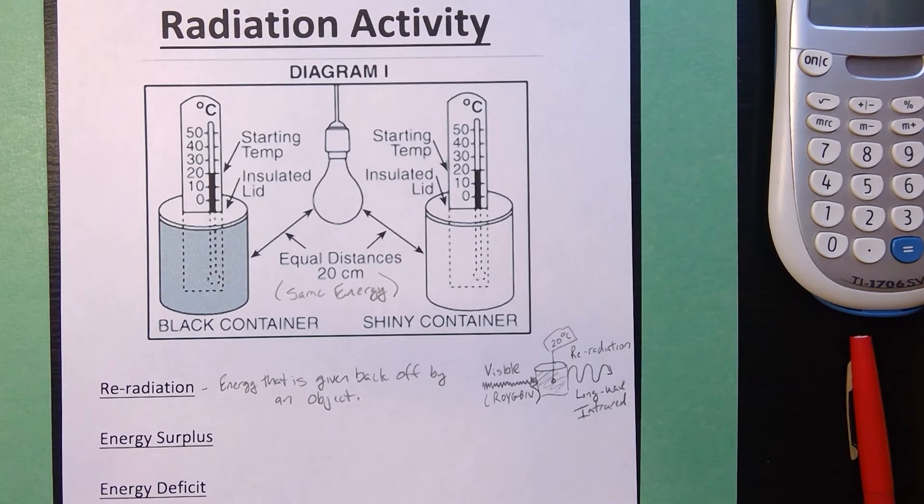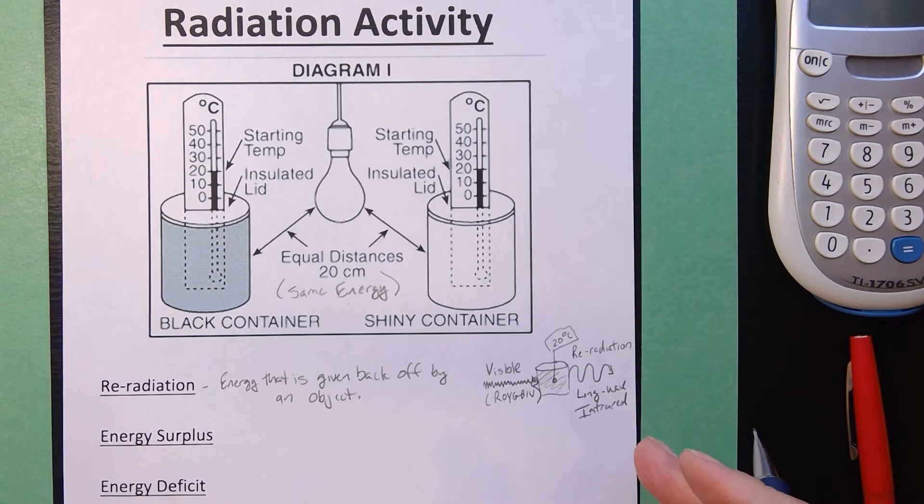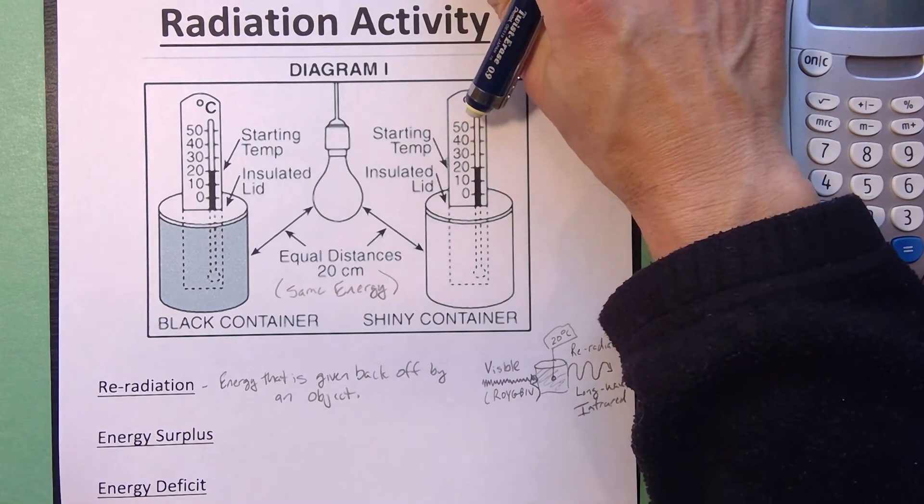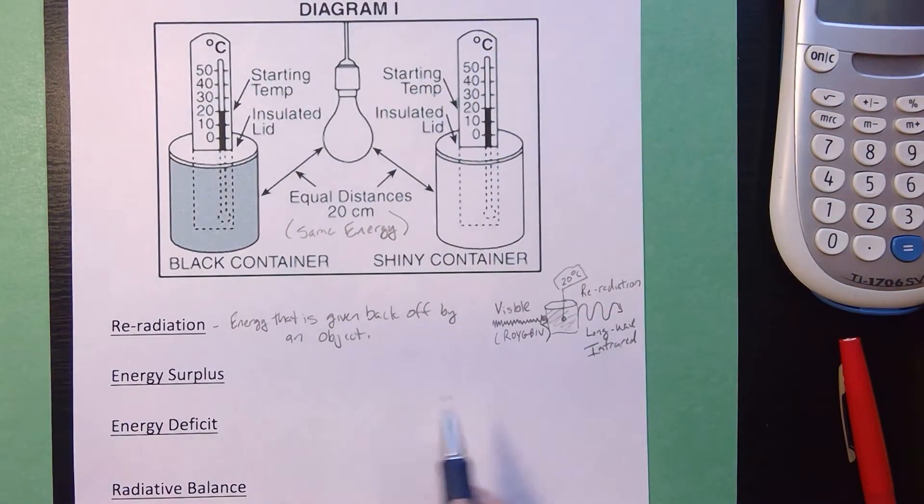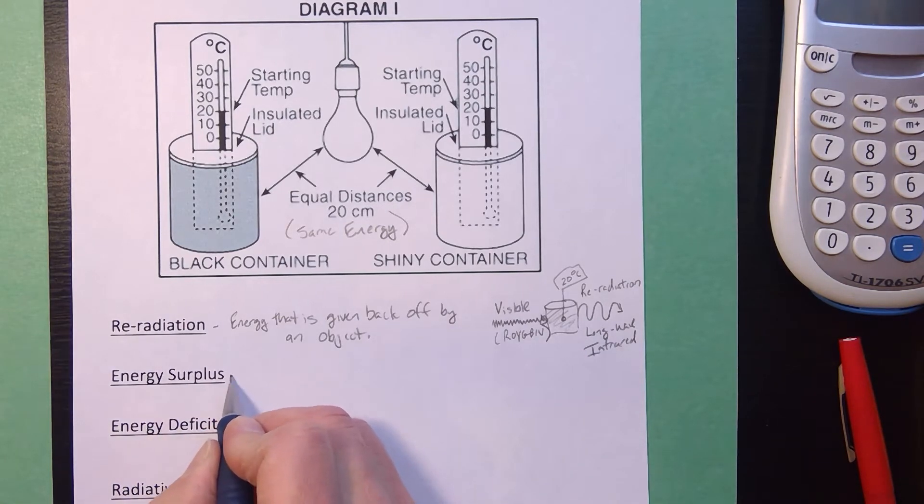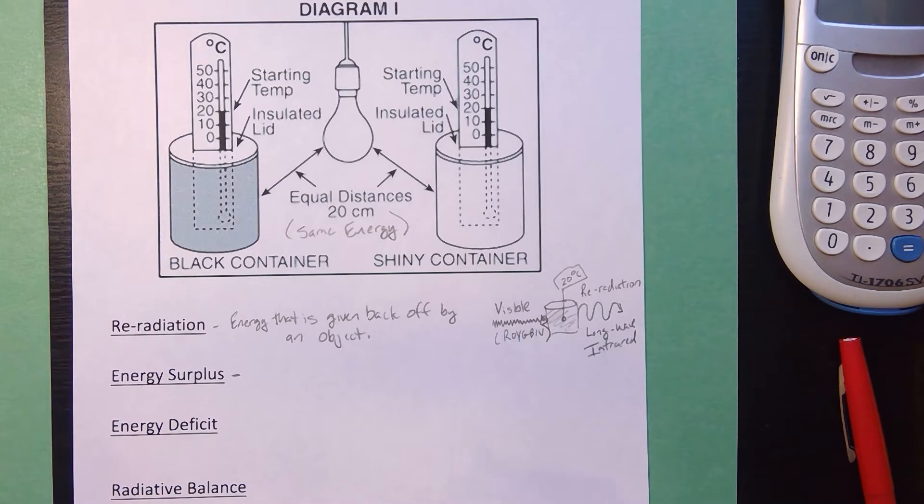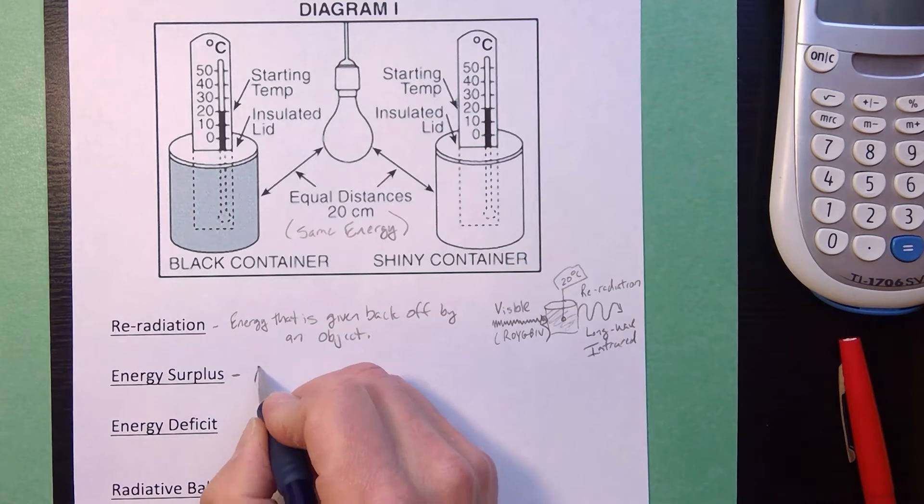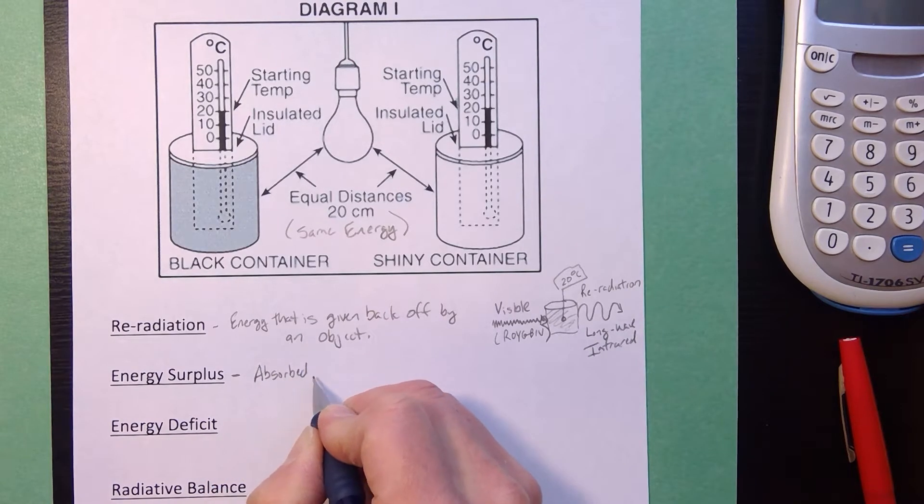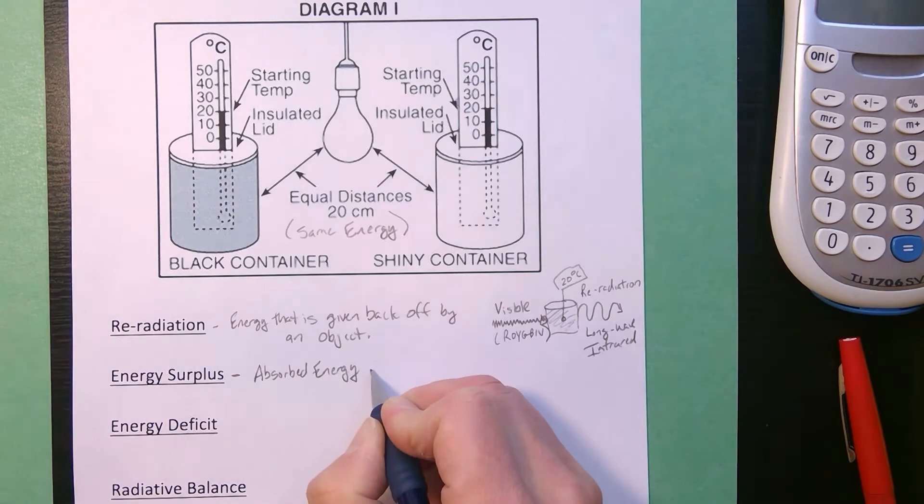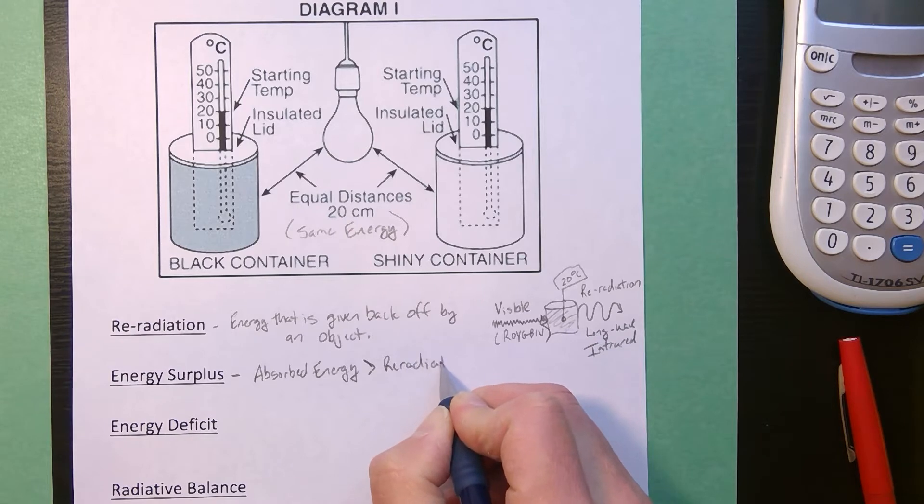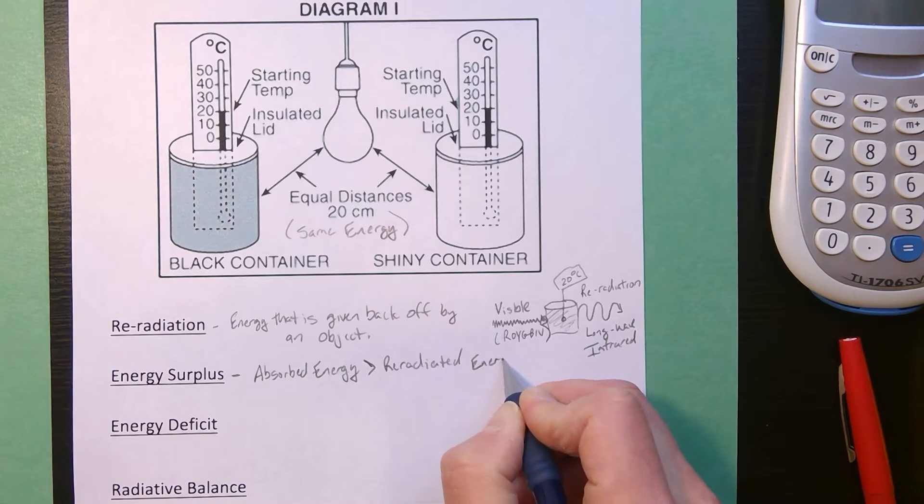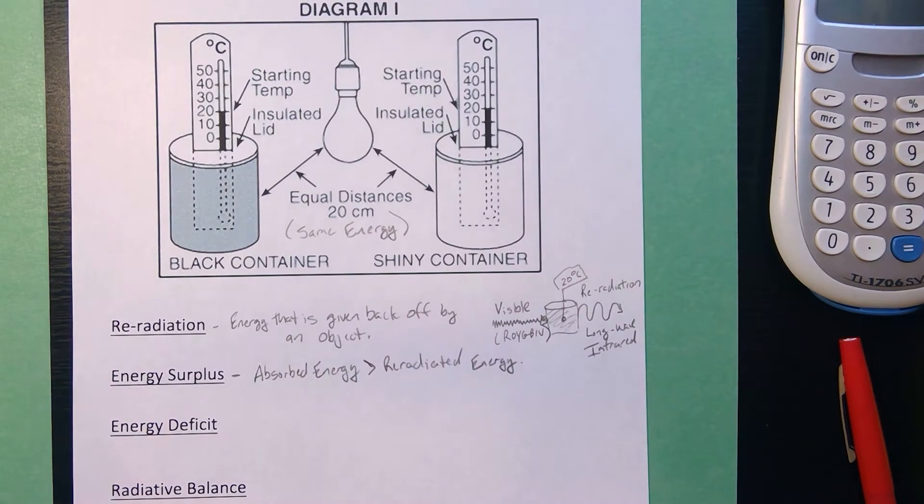Now, this activity is perfect for illustrating three different conditions. To really understand the temperature of an object, you have to ask yourself how much energy is coming in versus how much energy is going out. Surplus means you have an excess of something. So if something is in a state of energy surplus, that means the absorbed energy is going to be greater than the re-radiated energy.